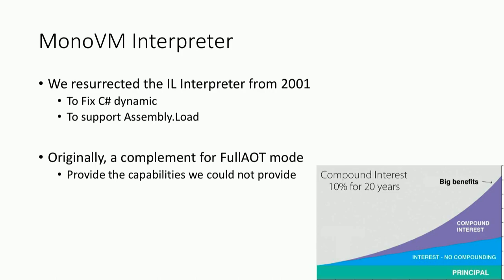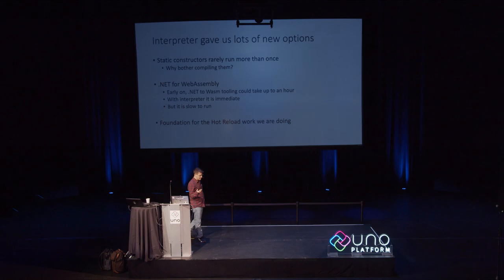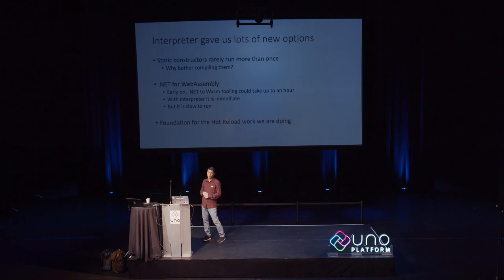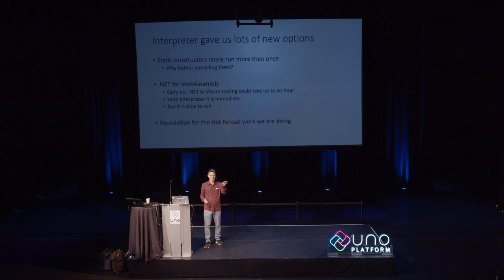The interpreter we're using today was a resurrection of the one originally built for Mono in 2001. About a year and a half ago we brought that code back from the dead. Initially it was about fixing C# dynamic and assembly loading, but the interpreter enables many nice compound features. For example, static constructors run only once and rarely do heavy work, so you can run them all with the interpreter — no point JIT-compiling them — and annotate the hot ones to JIT compile separately.